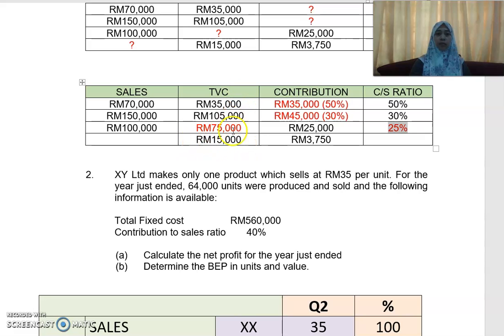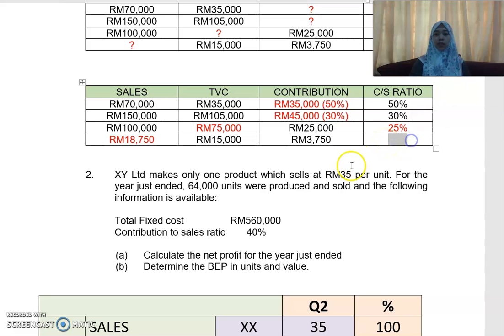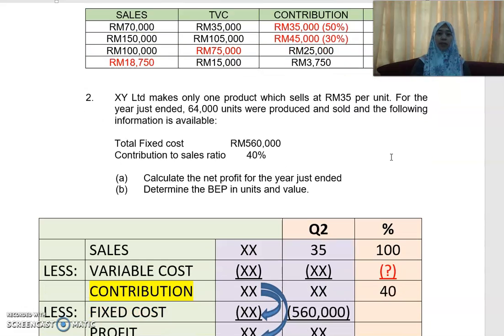In this case, you are given the total variable cost and the contribution. Total sales is the combination of these two figures. Adding them together gives you RM18,750. You can also work out the CS ratio as contribution divided by sales: RM3,750 divided by RM18,750. That finishes off the first exercise.